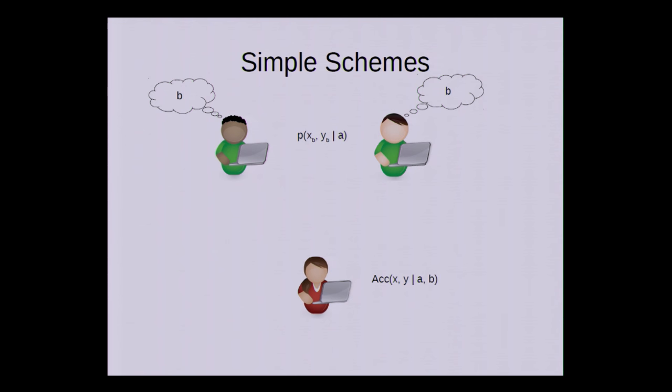Now what I'd like to show you is our impossibility result for a restricted class of bit commitment schemes, which we call simple schemes. What that means is that the communication works exactly as in the scheme we saw. Alice sends some message a. Bob replies with some message x sub b. That's dependent on the bit he wants to commit to. And to open, Charlie sends the bit b together with y sub b. Now since Charlie does not know a, his message must be distributed independently of a. And finally, Alice has an acceptance predicate to check if she should accept or reject that commitment.